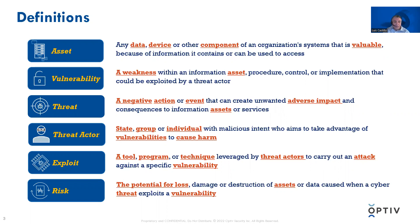We'll start with the definition of an asset. An asset is any data, device, or other component of an organization's systems that is valuable, either because of information that it contains or information that it can be used to access. Using a car analogy, an asset could be my car — a vehicle that takes me from point A to point B.